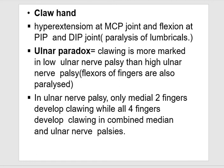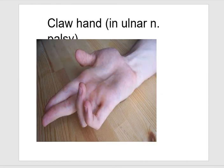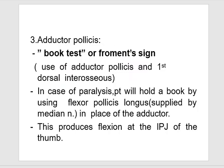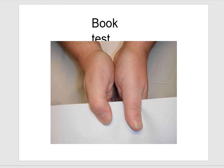Claw hand is hyperextension of the MCP joint and flexion at PIP and DIP joints — this is a paralysis of the lumbricals. A paradox: clawing is more marked in lower ulnar nerve palsy than higher nerve palsy, because flexors of the fingers are also paralyzed in higher lesions. In lower ulnar nerve palsy, only the medial two fingers develop clawing, while all four fingers develop clawing in combined median and ulnar lower nerve palsy. Froment's test uses adductor pollicis and first dorsal interosseous — the patient will not be able to hold a book using adductor pollicis and instead uses flexor pollicis longus (supplied by the median nerve), producing flexion at the IPJ of the thumb.